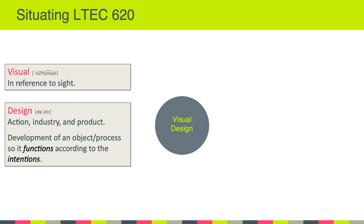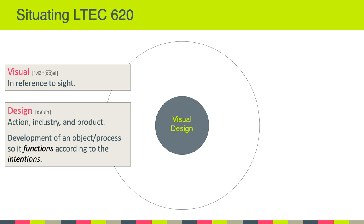This idea of designing with intention should prompt us to step back and situate a course on visual design within our broader context. We should ask ourselves: what is the context in which we are studying visual design? In LTCH 620, we are not studying visual design in a school of arts or a college of design. Instead, we're studying visual design in a college of education. That should remind us to think about the functions and intentions of visual design through the lens of teaching and learning.